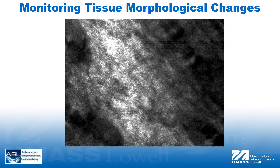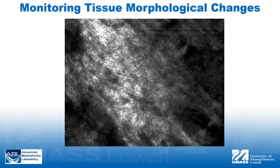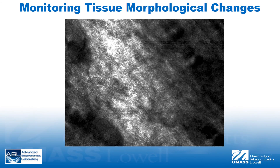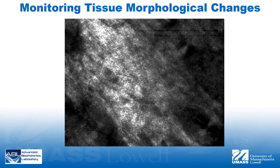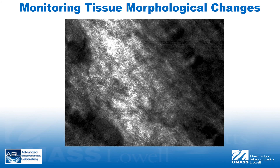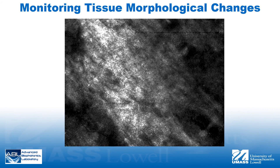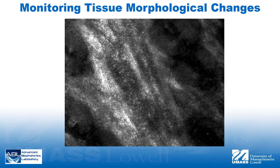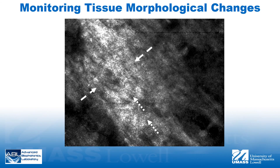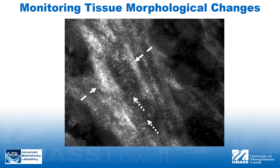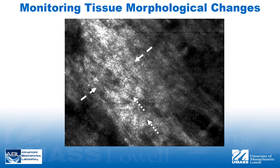This is a reflectance confocal video of in vivo mouse ear acquired from approximately 50 micrometers depth being heated to 60 degrees Celsius. As tissue temperature rises, the reflectiveness of dermal collagen increases, blood flow ceases, and the vessel collapses. Temperature-induced swelling of coagulated collagen induces the shrinkage of hair follicles.